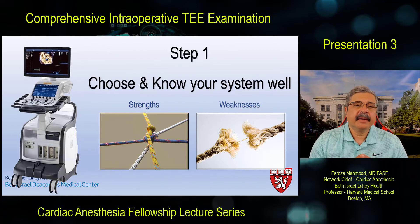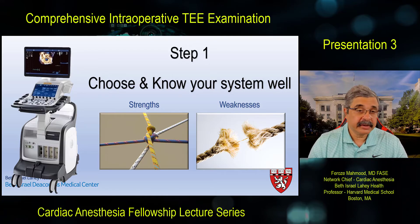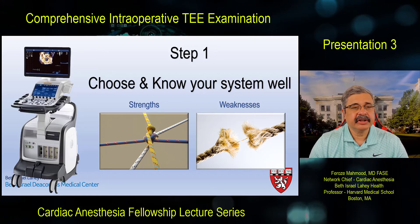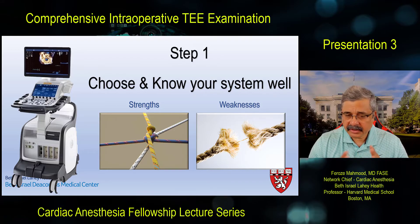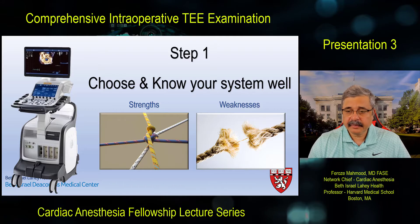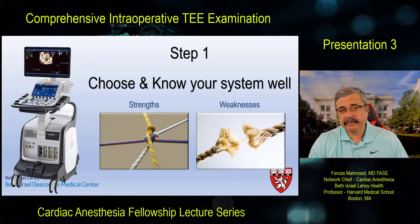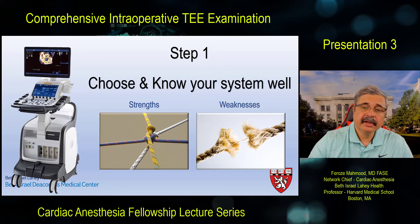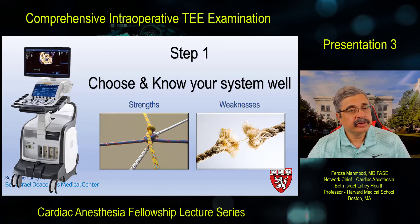Step one of setting up instruments is to choose and know your system well — its strengths and weaknesses. In places like ours where we have systems from Philips, Siemens, and GE, we can choose the specific system customized for the patient and situation — based on whether the patient has atrial fibrillation, whether you want single-beat full-volume acquisition with color flow Doppler, or specific presets like strain and speckle tracking.